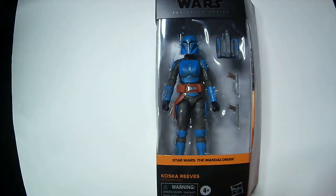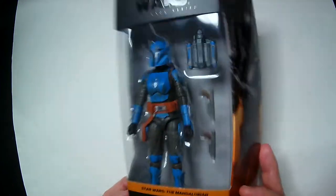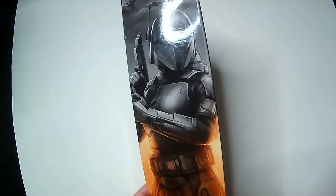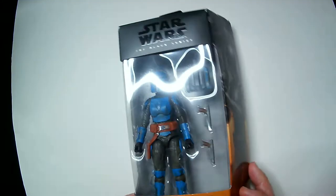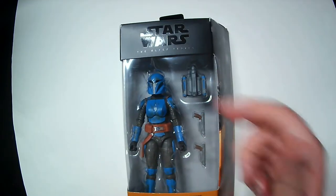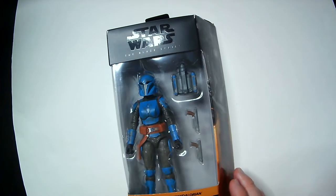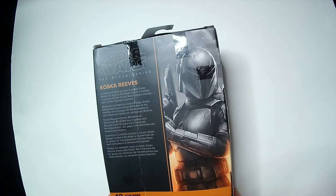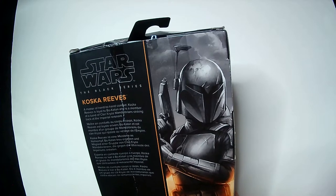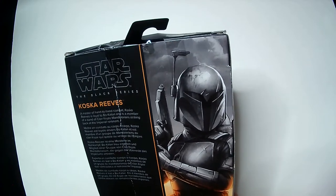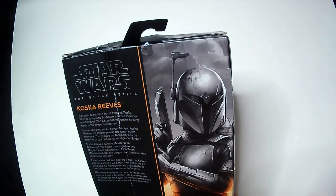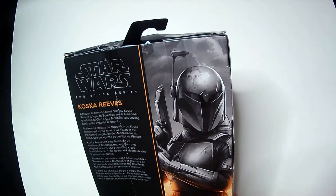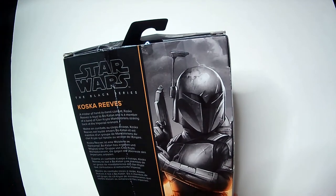Okay, here we have Koska Reeves from The Mandalorian. Some art right there, pretty cool. This actually has a jetpack and dual blasters. The cool blue armor I thought was kind of good looking. And a little blurb on the back: 'Master Pantoran combat. Koska Reeves, loyal to Bo-Katan, member of band of Clan Kryze Mandalorians, strikes back at the Imperial remnant.'